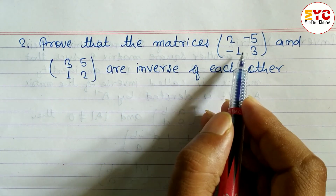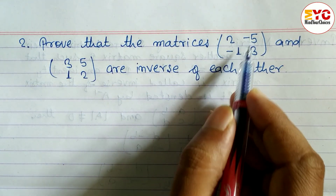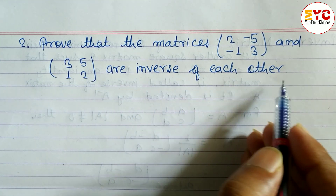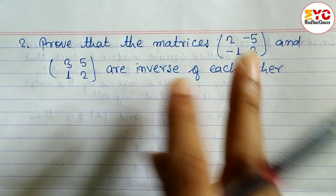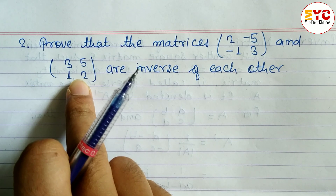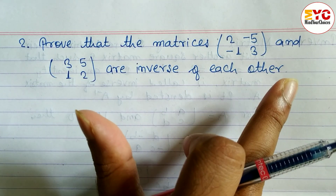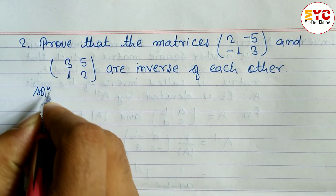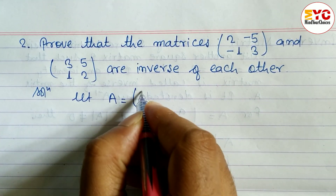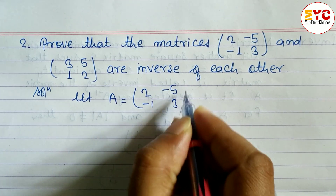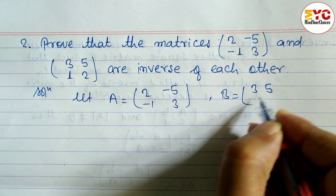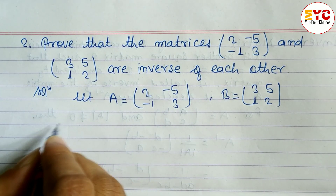Prove that the two given matrices are inverse of each other. Two matrices are given: A is equal to the matrix [2, -5; -1, 3] and B is equal to [3, 5; 1, 2]. We have to show that these two are inverse of each other.